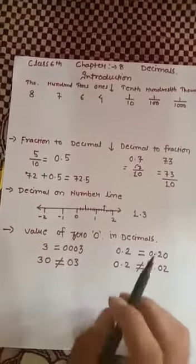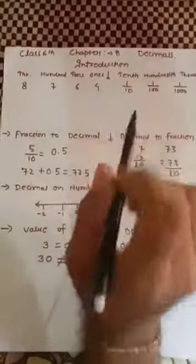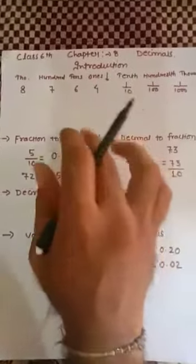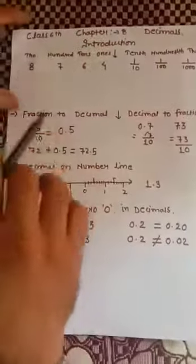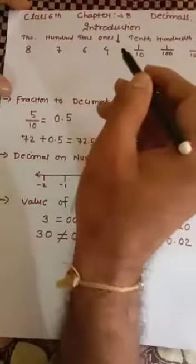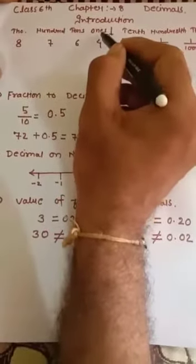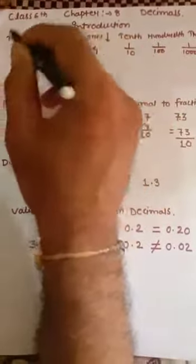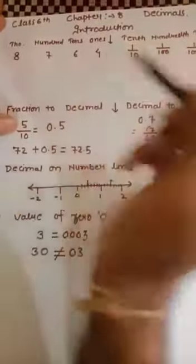Hello everyone, today we are going to solve chapter number 8 of class 6, that is Decimals. This is an introduction part of chapter 8. Now, if any number is given to us, we distribute that number in the form of its place values. The place values we have learned are ones, tens, hundreds, thousands, and so on — but this was the left-hand side of the place value.